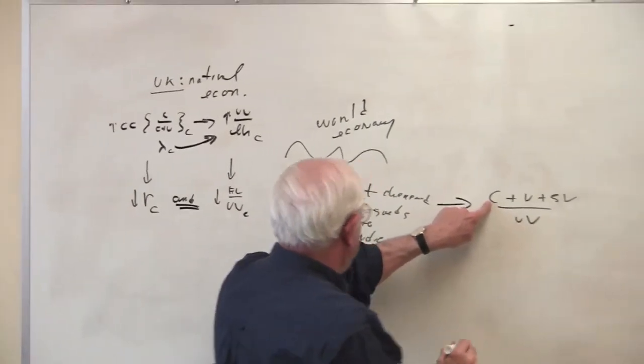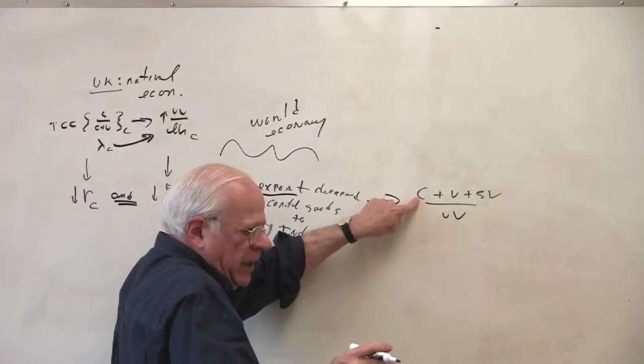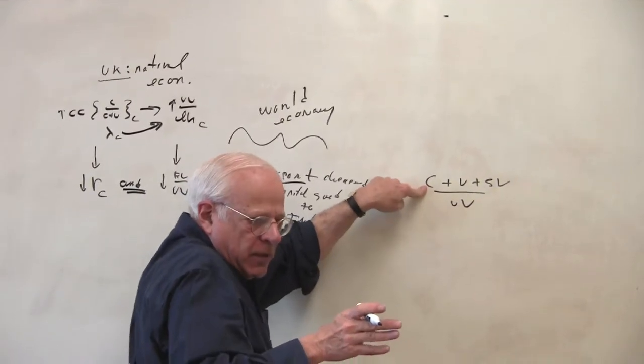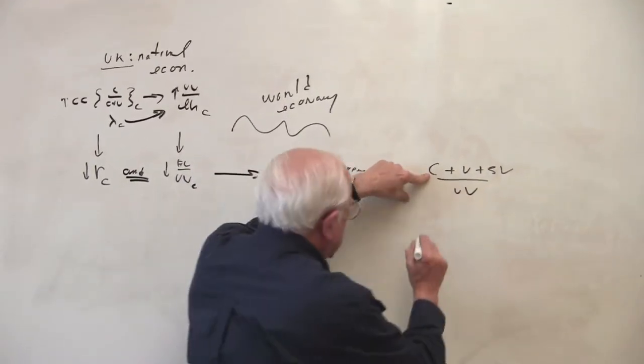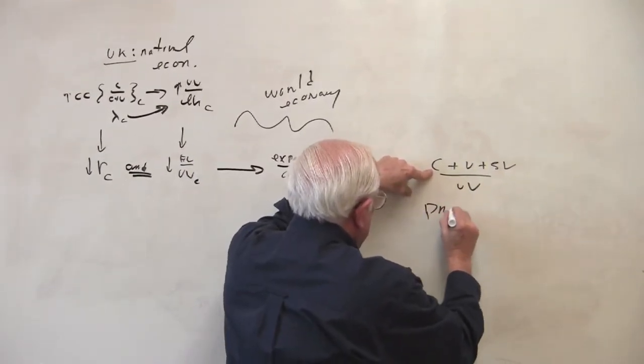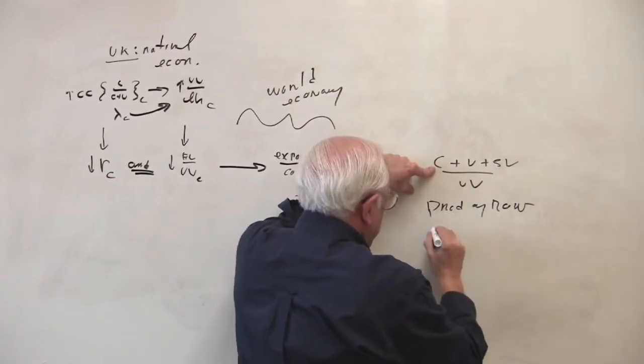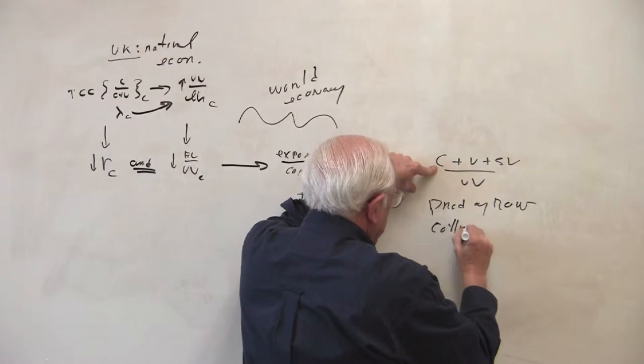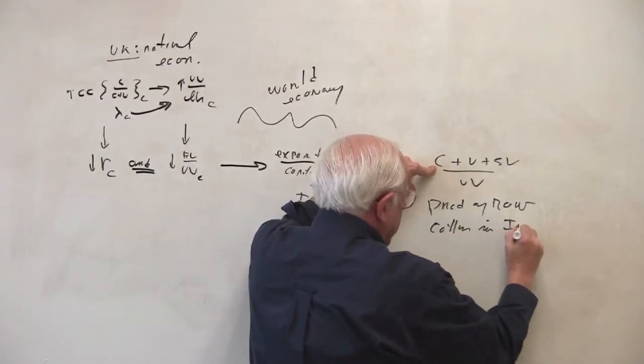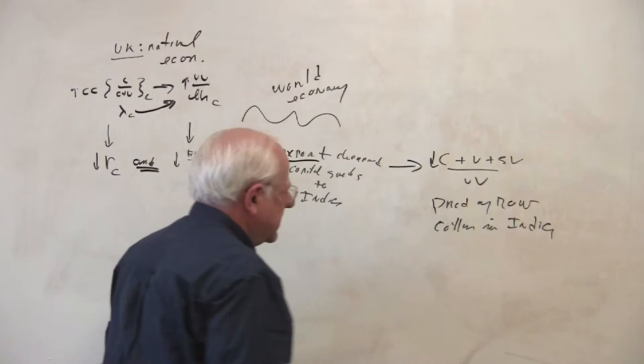These are the imports, the fixed capital, in the production of raw cotton, the raw material. In where? In India, thousands of miles away. So this becomes cheapened.